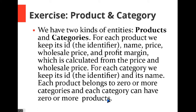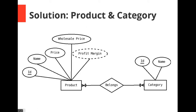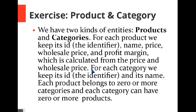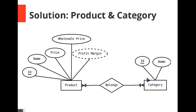This is the correct solution. We have product and category as entities. For each product we keep its ID as the identifier, its name, its price, and its wholesale price. We also keep its profit margin, which is computed from the price and wholesale price — so profit margin is a derived attribute and we use a broken line because it is computed from two other attributes. For the category, we keep its ID as identifier — so we underline it — and its name.